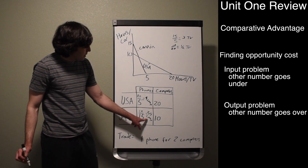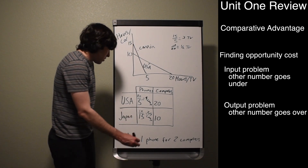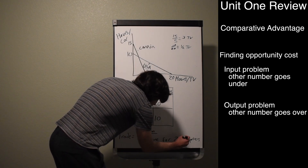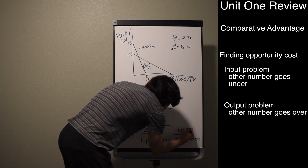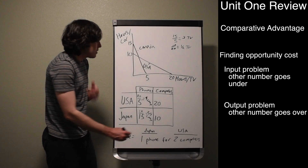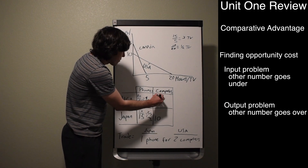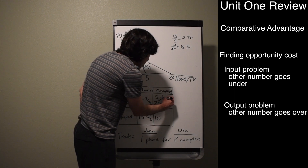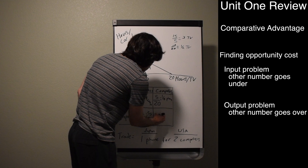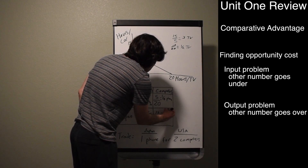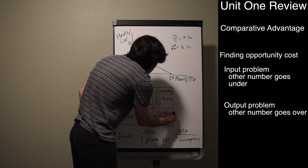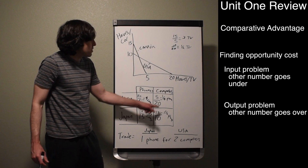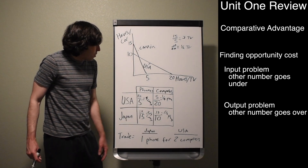Since two-thirds is less than 4, Japan has the comparative advantage in producing phones, so Japan specializes in phones and the US specializes in computers. We can also check the other side: for computers, the US has 5 over 20, which is one-fourth of a phone, and Japan has 15 over 10, which is one and a half phones. Since one-fourth is less than one and a half, the US clearly has the comparative advantage in producing computers.